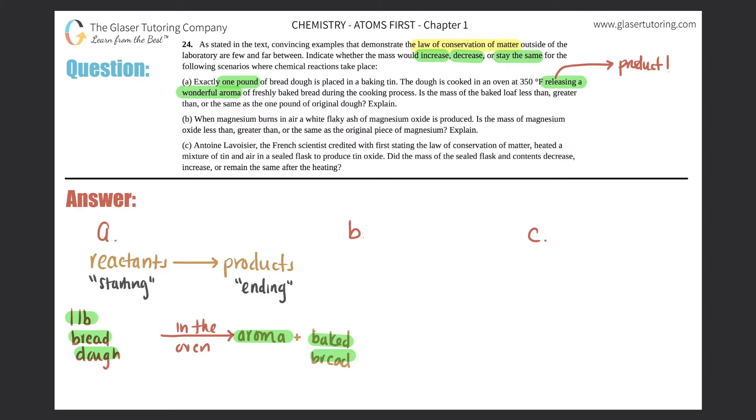Your reactants is the starting material. Your products is always what you end up getting. In this example, we have one pound of bread dough. It's placed in a baking tin and cooked in an oven. It released something - releasing is always what you form. So that would be on the product side. With this one pound of bread dough, I put it in the oven and out comes a wonderful aroma and the freshly baked bread.